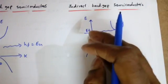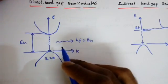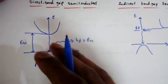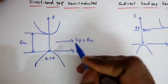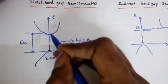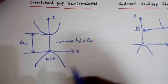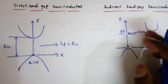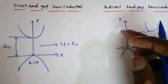That is why direct bandgap semiconductors are used in light-emitting diodes and lasers — because they radiate energy in the form of light due to the direct fall from the conduction band to the valence band without any change in the momentum of the electron. In indirect bandgap semiconductors, the electron moves through a defect state before falling to the valence band.